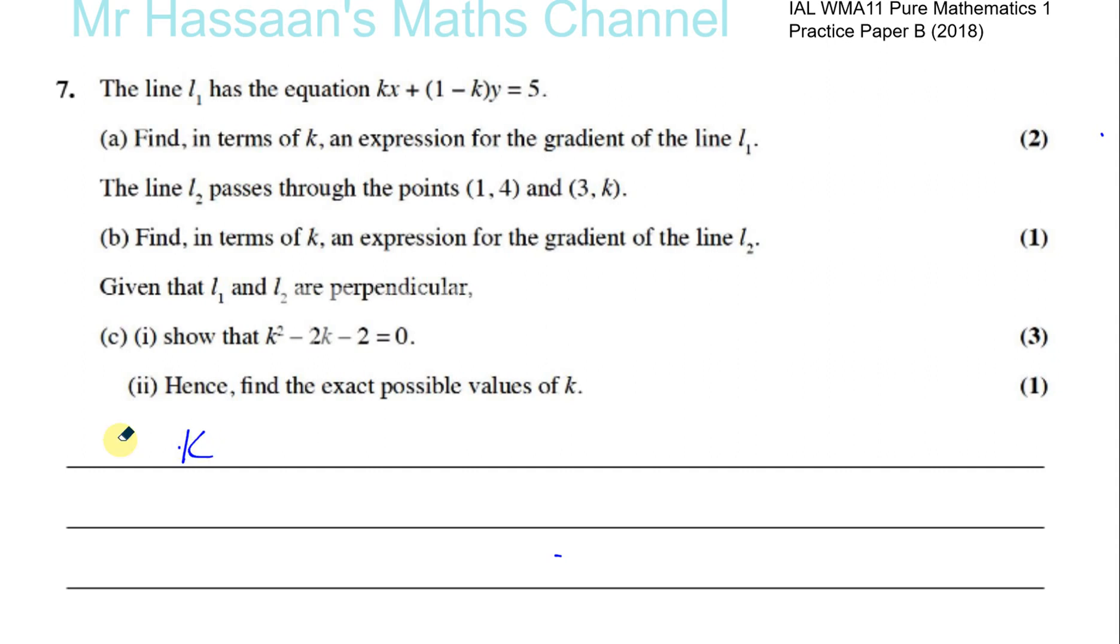So it's K, this is part A we're doing, Kx plus (1 minus K) times Y equals 5. And we have to find in terms of K an expression for the gradient of the line L1. Now we know that if I express an equation in the form Y equals MX plus C, where we make Y the subject of the equation, then the coefficient of X will be the gradient.